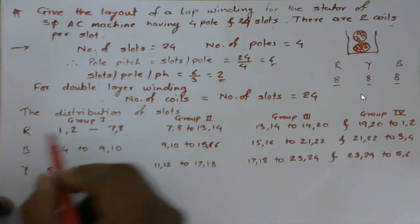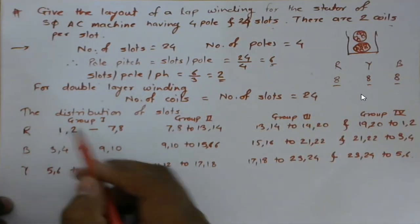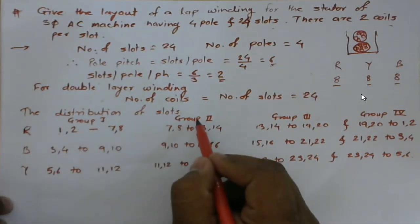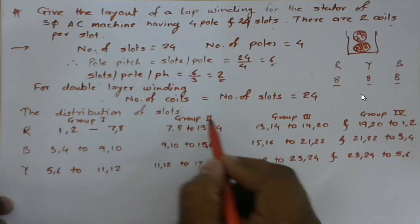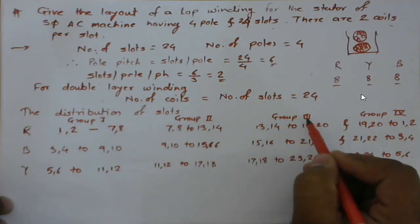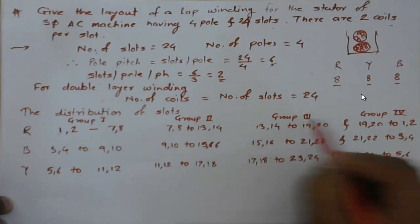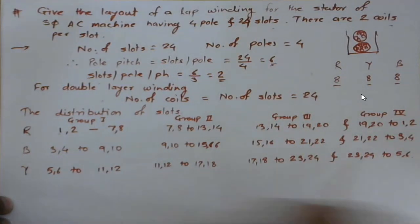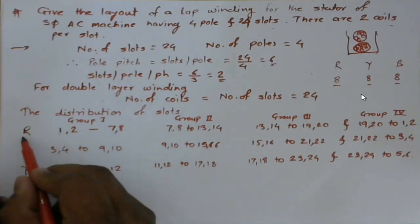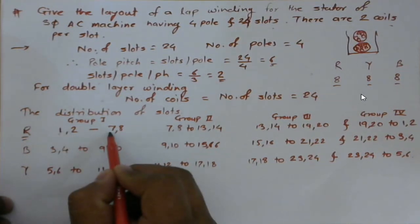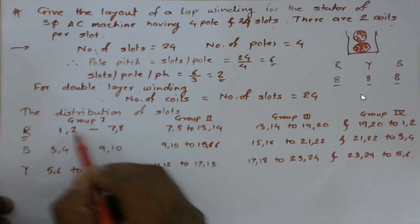For R-phase we have four groups of two coils each: group 1, group 2, group 3, and group 4. Under the first pole, the first coil of group 1 goes from slot 1 to slot 7, and the second coil goes from slot 2 to slot 8.